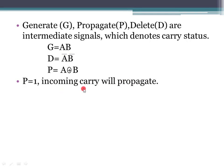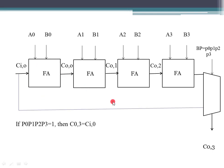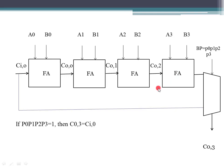Now let's look at carry bypass. In the ripple carry adder, carry bypass relies on the propagate condition. We check propagate signals P0, P1, P2, and P3 for a 4-stage block. If all propagate values are 1, the block propagate signal BP is 1, meaning carry will propagate through the entire block — the output carry equals the input carry.